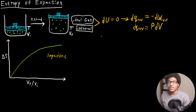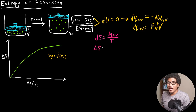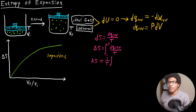So now how do we calculate the entropy? When calculating the entropy, DS is going to be equal to DQ_rev over the temperature. In order to calculate our total change in entropy for our system, we need to integrate: ΔS equals the integral from the initial to the final state of DQ_rev over T. Since it's an isothermal process, we know we can take the temperature out of the integral. So we have ΔS equal to 1 over T times the integral from initial to final state of DQ_reversible.